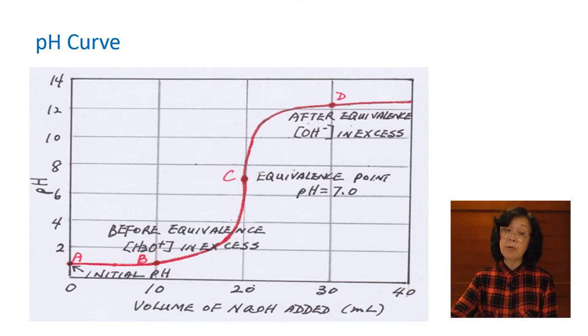At point B, this is halfway to the equivalence point. Equivalence point, we have 20 milliliter added, so halfway is 10 milliliter. At this point, the hydrogen ion is in excess. At the equivalence point, both acid and base are used and pH is 7 for the water. And beyond the equivalence point at point D, now we have excess hydroxide dictating the pH value.